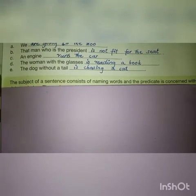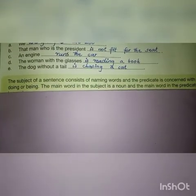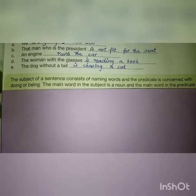The subject of a sentence consists of naming words — sentence ka subject naming words per mustamil hota hai. The predicate is concerned with the doing or being. The main word in the subject is a noun, and the main word in the predicate is a verb.